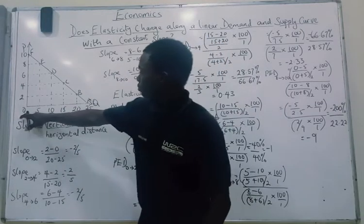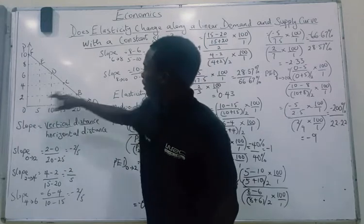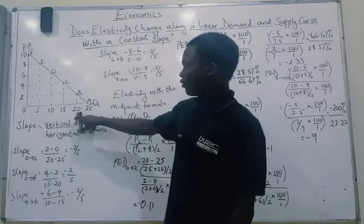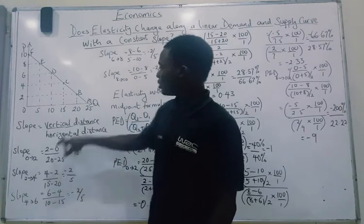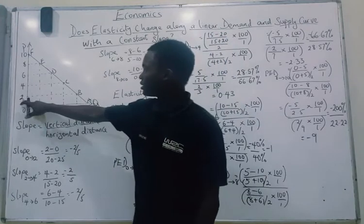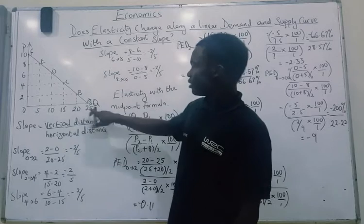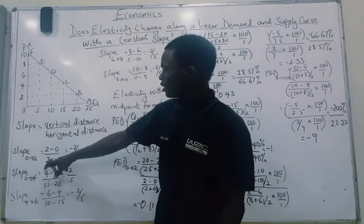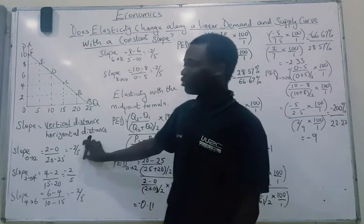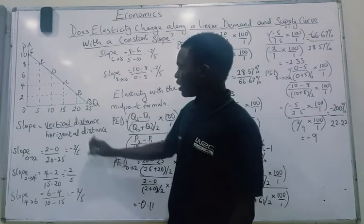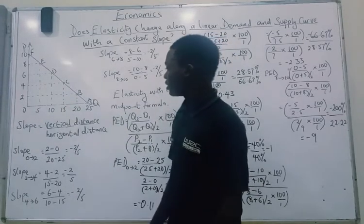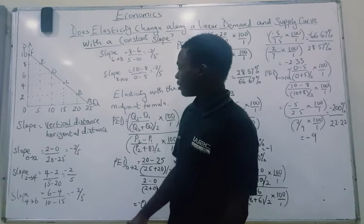When the price increases from 0 to 2, quantity fell. So the denominator is the new quantity, 20, minus the old quantity, 25. We have 2 minus 0 divided by 20 minus 25, which gives us minus 2 over 5. The demand curve is downward sloping, giving us a negative slope, which tells us there is a negative relationship between the price of this commodity and the quantity consumers are buying.